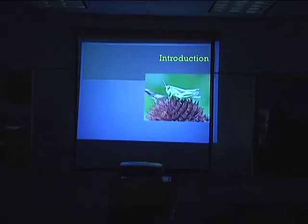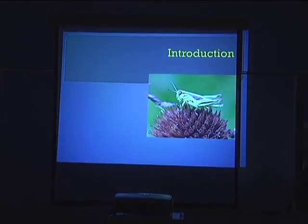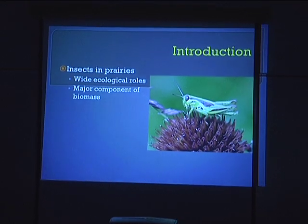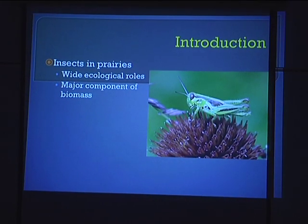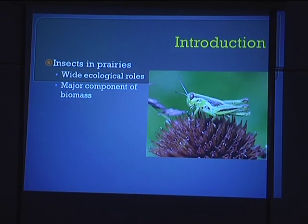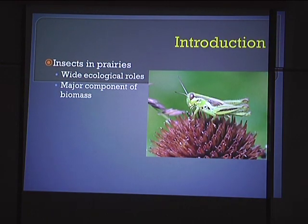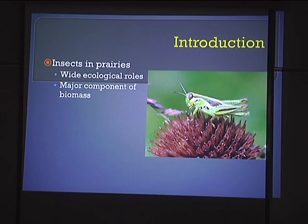A little bit of background information about why I chose this project and why I think it's so important. First off, insects in prairies are just huge. They've got a wide array of ecological roles, everything from predation to being a food source for a variety of different organisms. They're pollinators, they help with soil decomposition and soil aeration. Without them, really the tall grass prairie and most other ecosystems in the world just could not exist, or at the very least could not function the way we know them today.